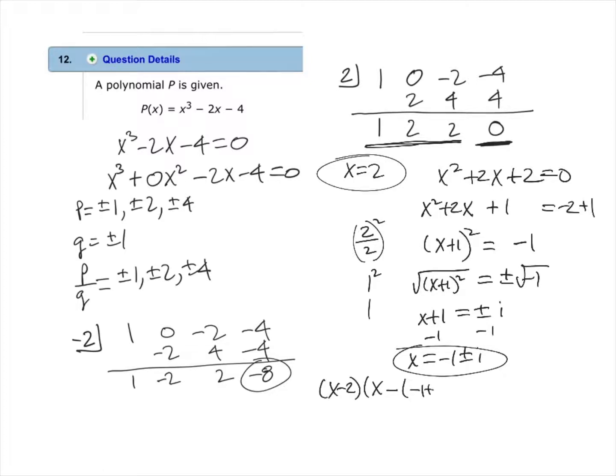Minus 1 plus i and then x minus negative 1 minus i. Now notice that we have a negative in between x and the root in each case and then we have each of the roots written in parentheses. It is important that these parentheses are applied.